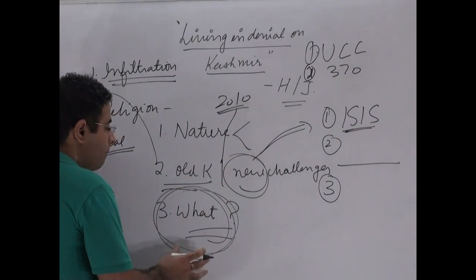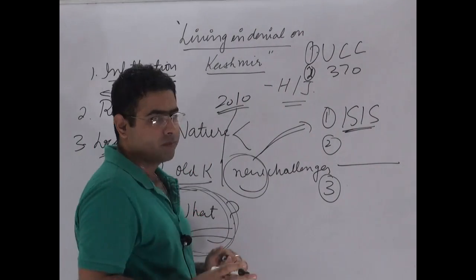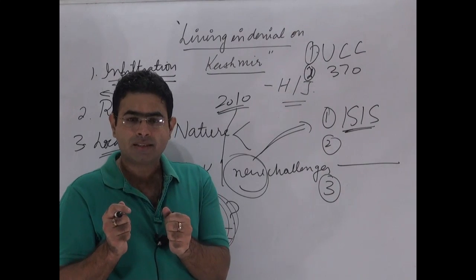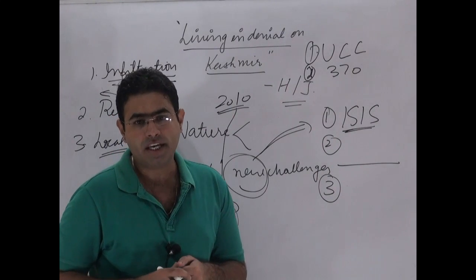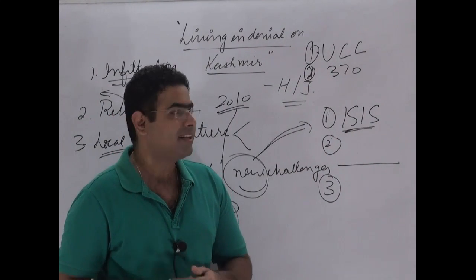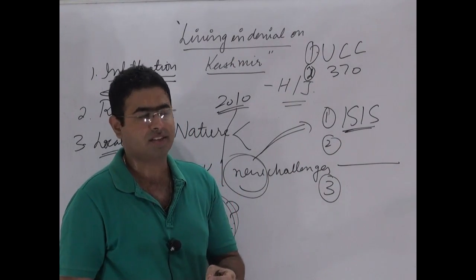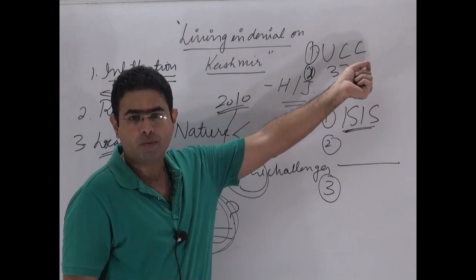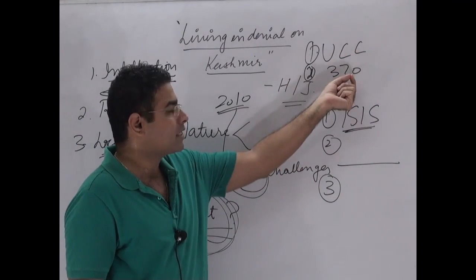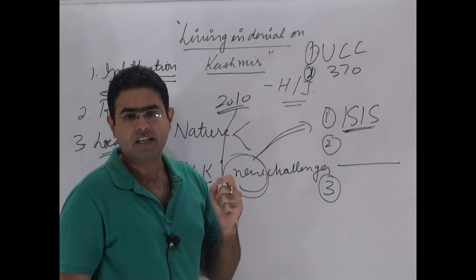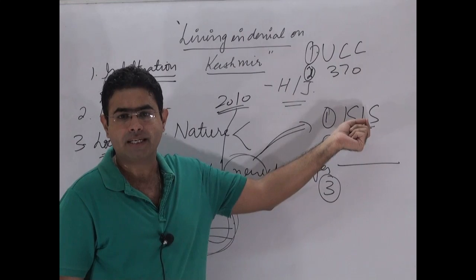First of all, the government must assuage, the government must address the issues of the population that nothing will be done without their consensus with respect to the Uniform Civil Code, with respect to Article 370, with respect to rising fundamentalism.